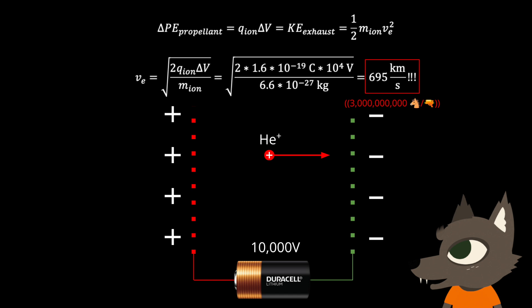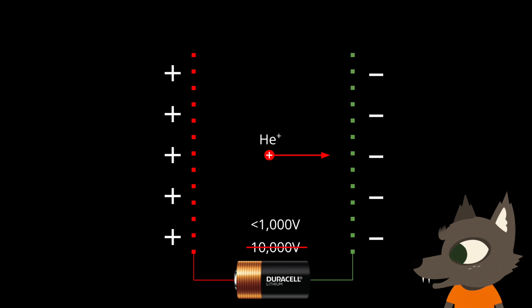This is a bit misleading though. Even though electric thrusters can operate at such high exhaust velocities, most only operate up to around 30 kilometers per second, which is still about 10 times better than a chemical rocket.